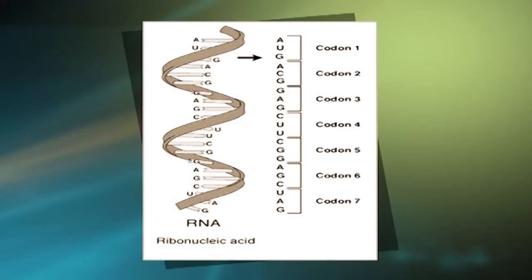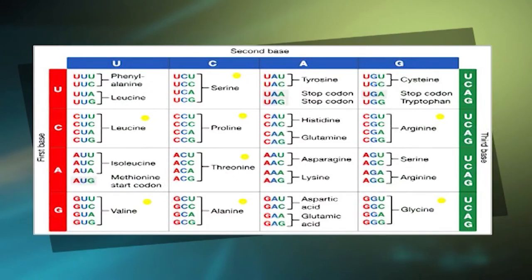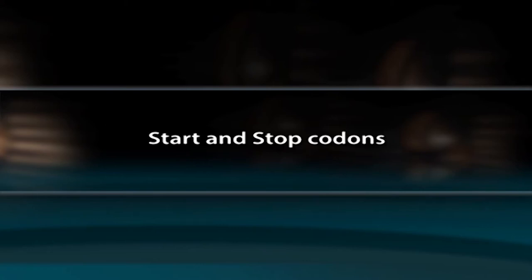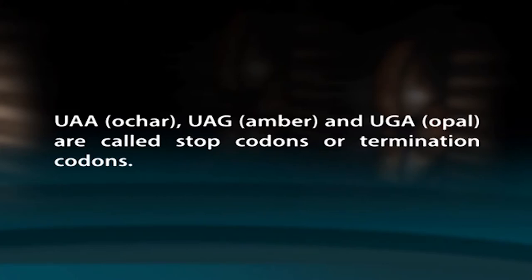Regarding the number of codon bases: mRNA is composed of 4 bases — adenine, uracil, guanine and cytosine. Each codon consists of 3 bases, giving 4³ or 64 possible codon sequences. The codon AUG is used to initiate polypeptide chains in both prokaryotes and eukaryotes; in rare instances GUG is used. The initiator tRNA is tRNA-fMet in prokaryotes and tRNA-iMet in eukaryotes. Of the 64 codons, 61 specify amino acids; the remaining 3 — UAA (Ochre), UAG (Amber), and UGA (Opal) — are stop codons that facilitate termination of translation.